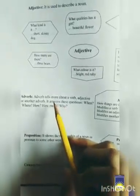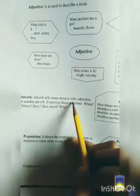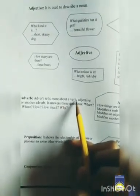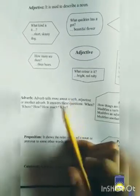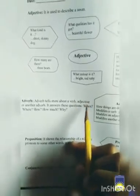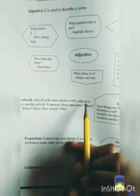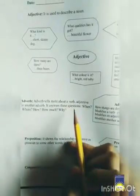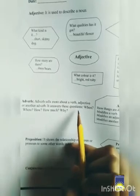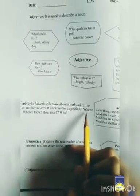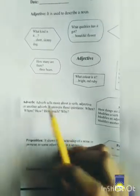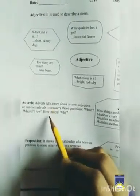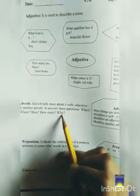Adverb, kitne describe kertay hai, verb ko. Yani, koi action kis taran se perform ho raha hai. Adjective ko bhi describe kertay hai. Or, kisi aur adverb ko bhi. Ye kuch questions ke answer kertay hai. Means, koi action kab perform hua? Kaha perform hua? Kaise perform hua? Kitna perform hua? Or, kyun perform hua?